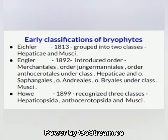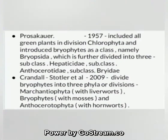In 1899, three classes were recognized: Hepaticopsida, Anthocerotopsida, and Musci. Cower in 1957 included all green plants in division Chlorophyta and introduced bryophytes as a class — Bryopsida — further divided into three subclasses: Hepaticidae, subclass Anthocerotae, and subclass Bryidae.